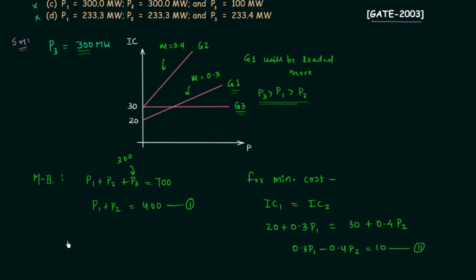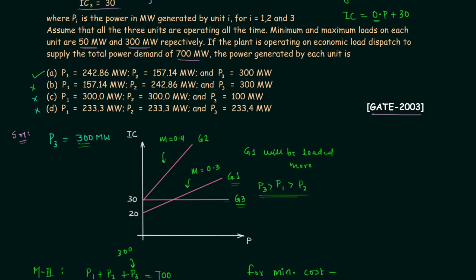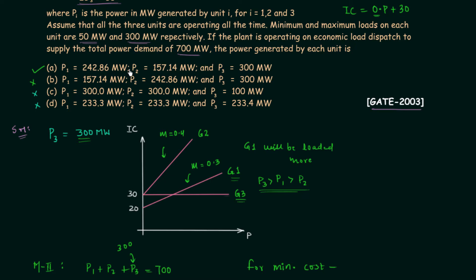Solving equations 1 and 2 simultaneously gives P1 = 242.86 megawatt and P2 = 157.14 megawatt. This matches option A, confirming it as the correct answer with P3 = 300 megawatt. There are two ways to solve this type of problem — choose the method most suitable to the situation.